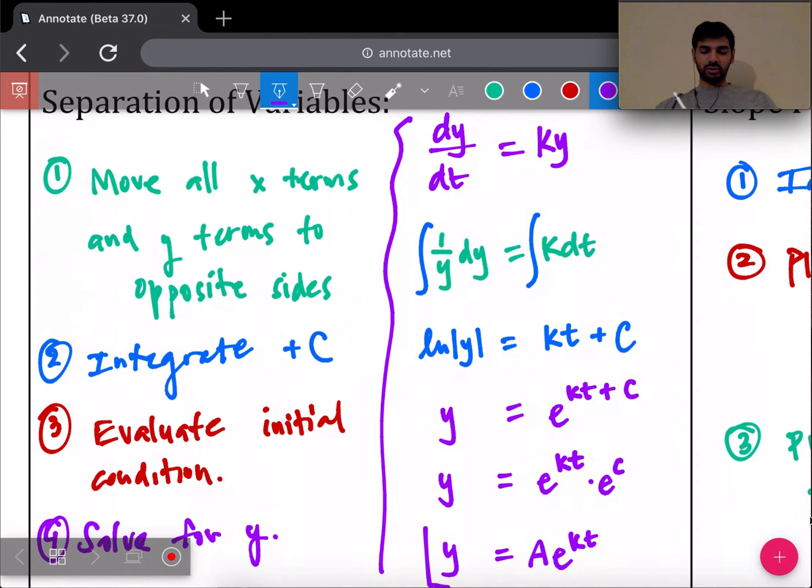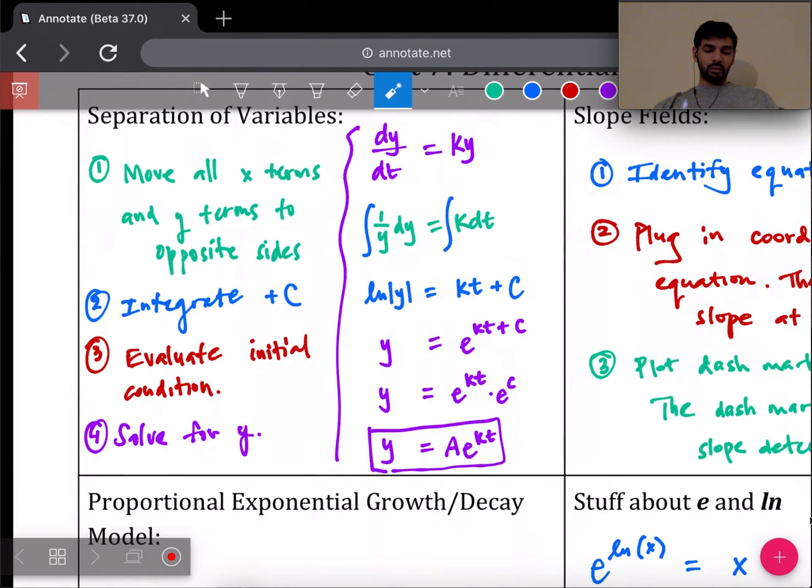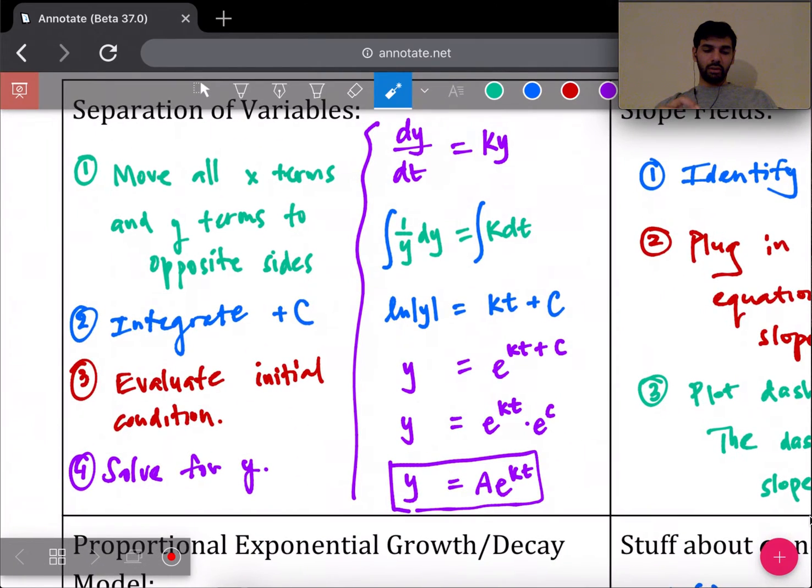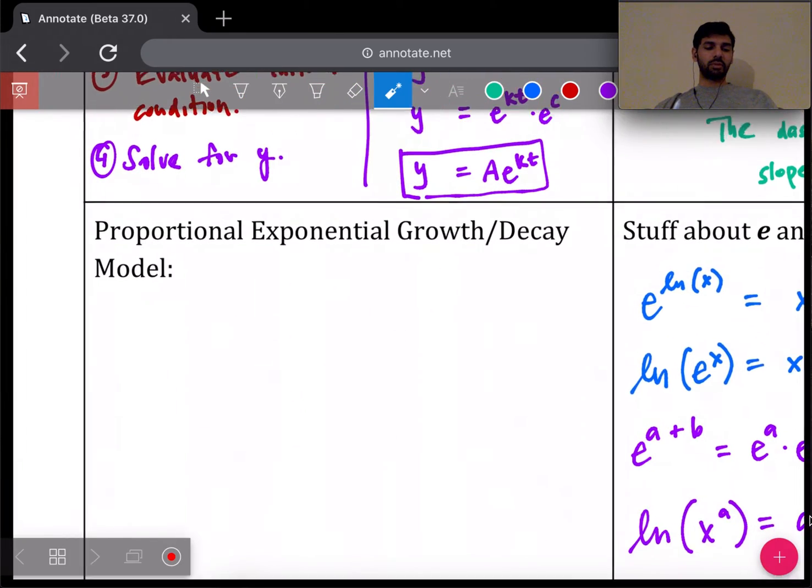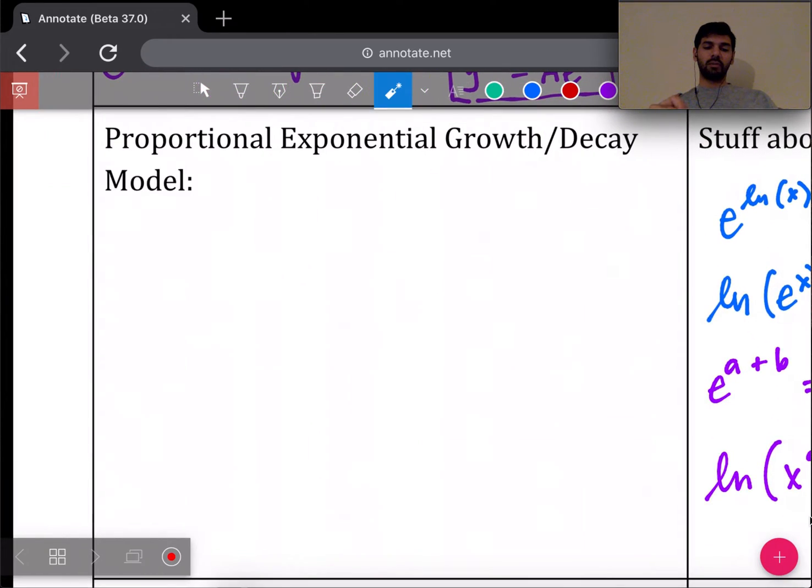I'll introduce a new letter to represent another constant: A instead of e^C, so A times e^(kt). This is your most simplified version of this solution, and on the AP test this one shows up very often. This is called the proportional exponential growth or decay model.